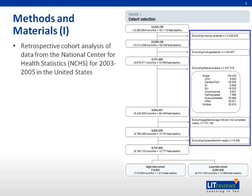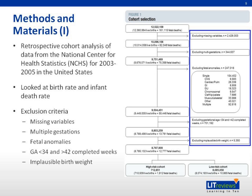This is a retrospective cohort analysis of data from the National Center for Health Statistics for 2003 to 2005 in the United States, looking at birth rate and infant death rate. Exclusion criteria included missing variables, multiple gestations, fetal anomalies, gestational age less than 34 and greater than 42 completed weeks, and implausible birth weight.